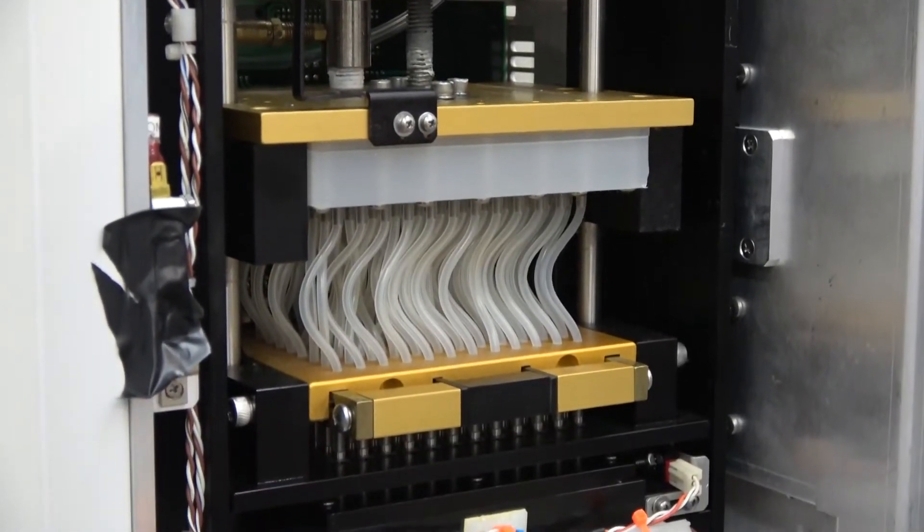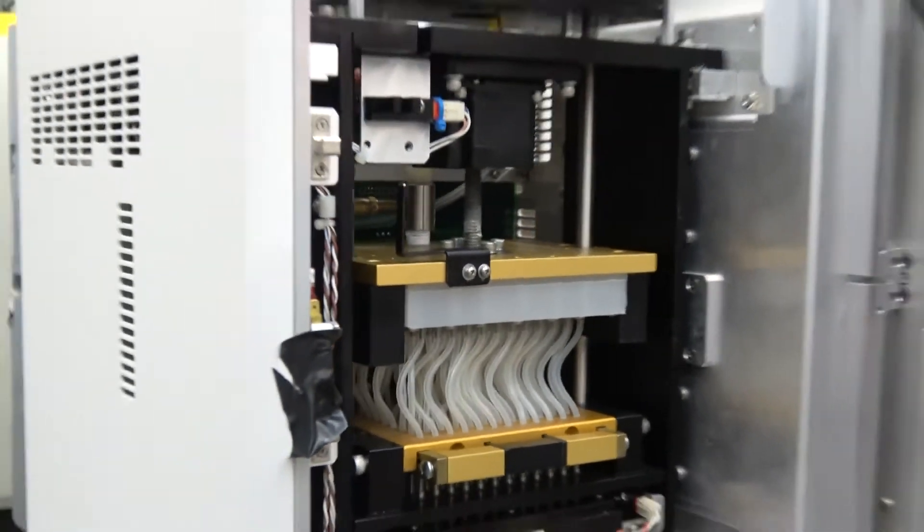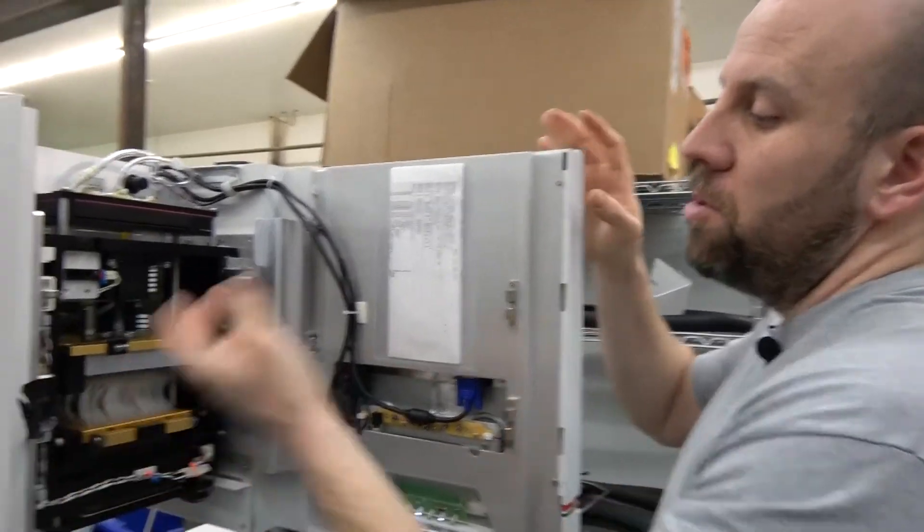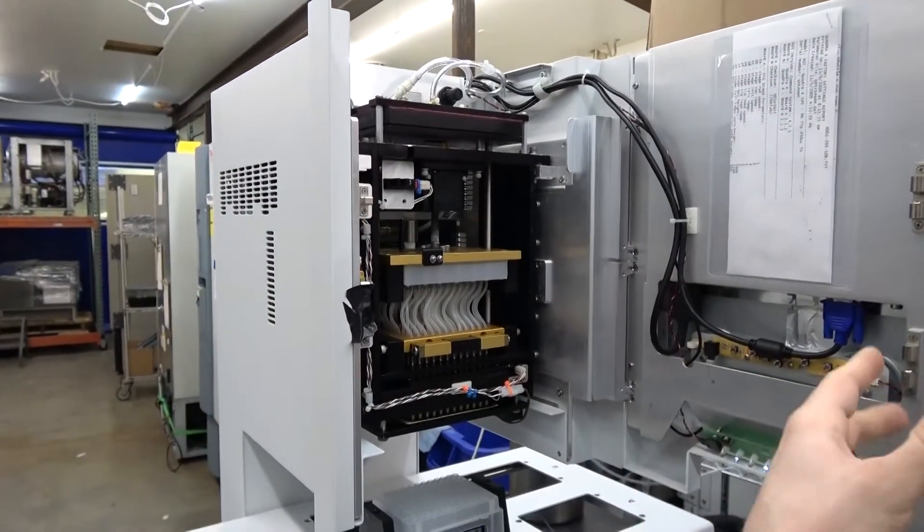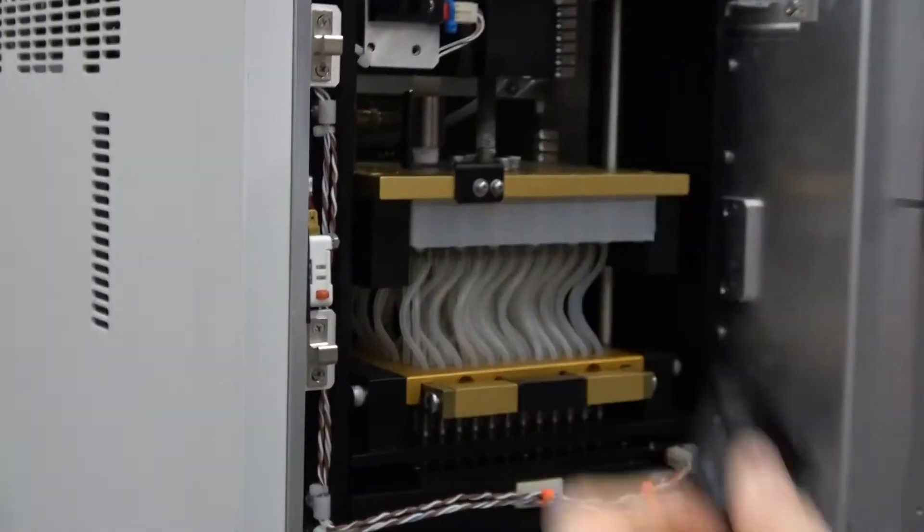You can also use nitrogen with these instead of the built-in air pump - an external nitrogen source. To have it operate while this door is open, we have to bypass this little switch.